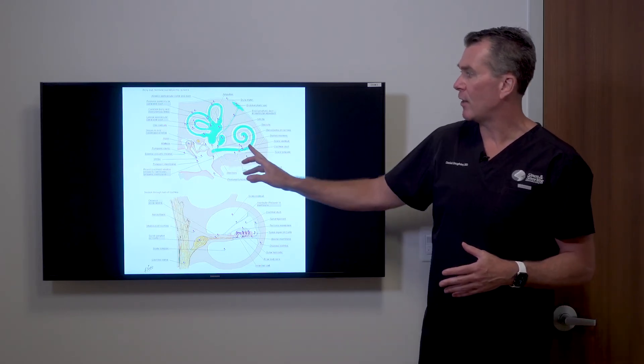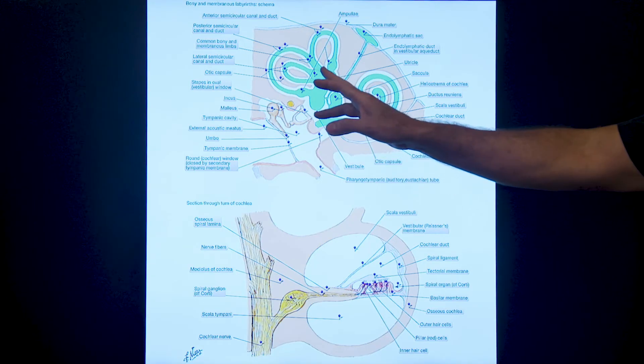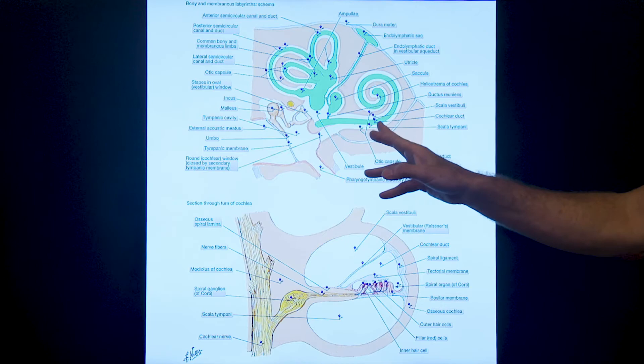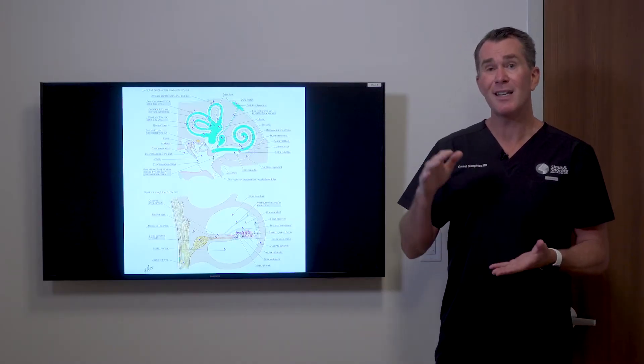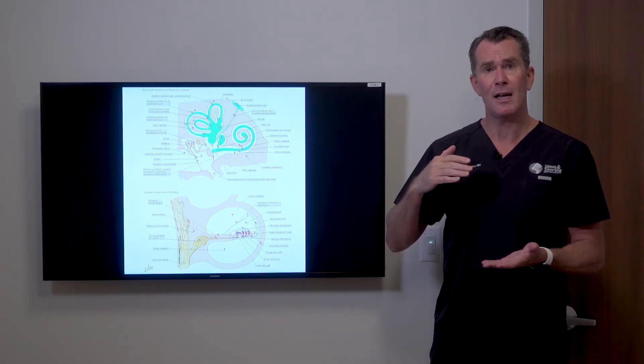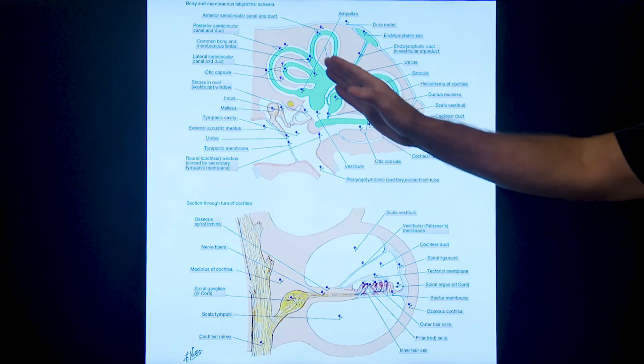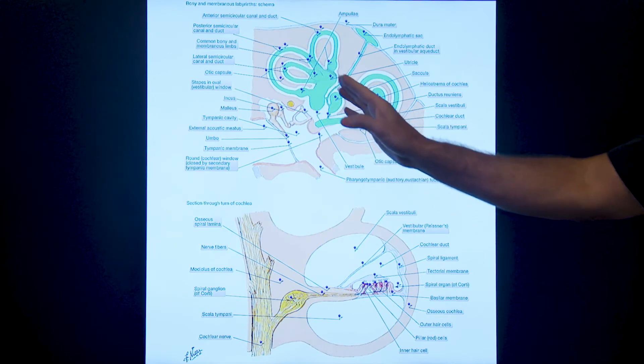Interestingly, that same inflammation can affect the hearing organ because the cochlea, the hearing organ, and the labyrinth are connected and share fluid. If this occurs, the patient can have very significant sudden hearing loss where the hearing just drops out dramatically on that side. Patients may arrive with vertigo only, hearing loss only, or a combination of the two.